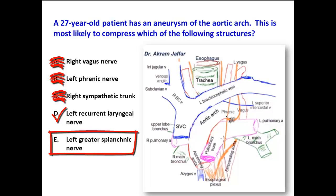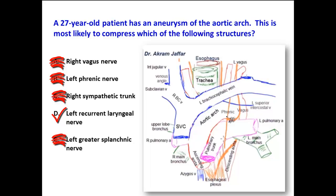The left greater splanchnic nerve is a branch of the sympathetic trunk, and as mentioned, the sympathetic trunk is away from the arch of the aorta. The greater splanchnic, lesser splanchnic, and least splanchnic nerves — all branches of the sympathetic trunk — are away from the arch of the aorta and less likely to be compressed. So the nerve most likely to be compressed in cases of aneurysm of the aortic arch is the left recurrent laryngeal nerve.